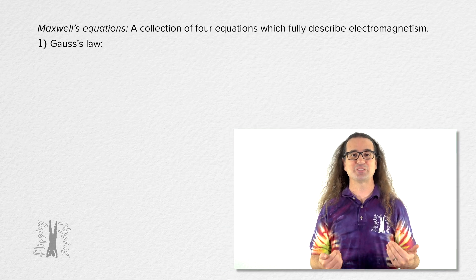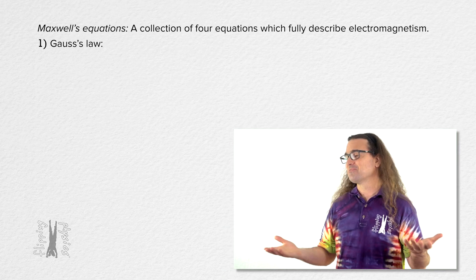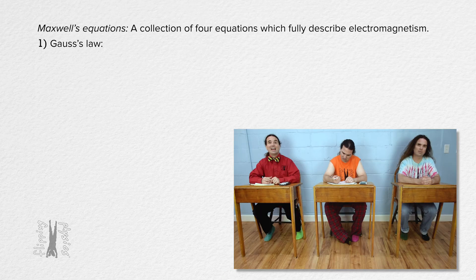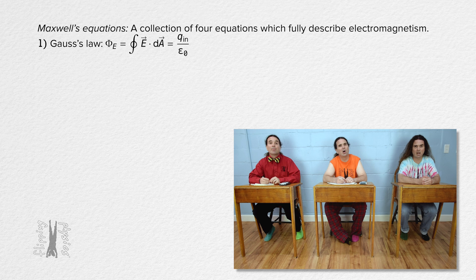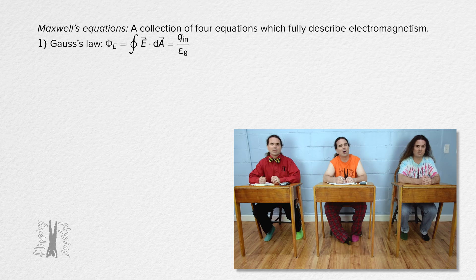The first one is Gauss's law. Bo, remind me, what is Gauss's law? Gauss's law states that the electric flux through a closed surface equals the closed surface integral of the dot product of electric field and area dA, which equals the charge enclosed in the Gaussian surface divided by the permittivity of free space.